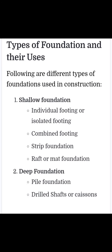Types of foundation and their uses: shallow foundation is categorized into four categories — individual footing, combined footing, strip footing, and raft or mat foundation. Individual or isolated footing is defined as a single isolated footing in which the load is transferred to a shallow depth. Combined footing is defined as one in which two or more footings are constructed on the ground surface and load is transferred to the shallow depth.